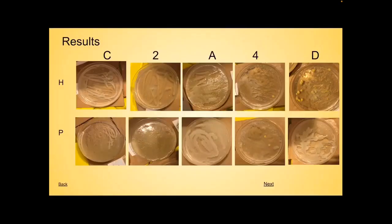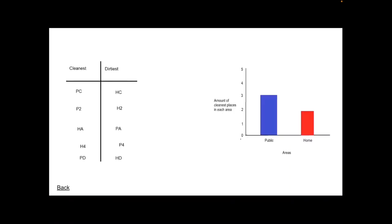Results. First, the top row is the house. The second row is the public places. The first column is the cleanest. Second column is the second cleanest. Third column is the average. Fourth column is the second dirtiest. The fifth column is the dirtiest. These are some graphs. There's a t-chart and a bar graph. I'll let you look at those for a little bit. Okay, let's move on.